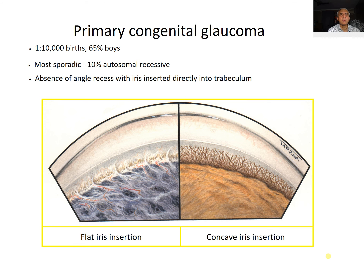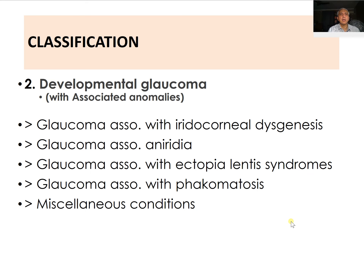There is an absence of angle recess with the iris inserted directly into the trabeculum. There is a flat iris insertion in one type and a concave iris insertion in another, and those are the two types of insertions seen in this condition.